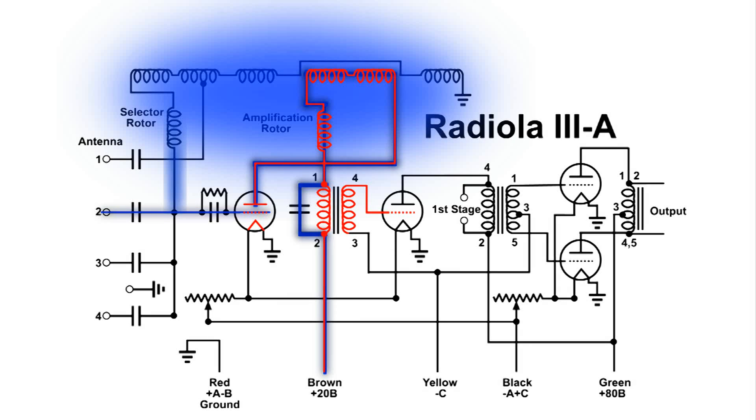And it, of course, is sent over to the control grid, which amplifies the signal, the audio signal. And the primary of the second audio transformer is magnetically coupled to the secondary, but this time we have a push-pull circuit, and there's two signals being sent to the next two tubes. Each of those tubes amplifies the signal, and it gets sent to the output, which drives the horn speaker.